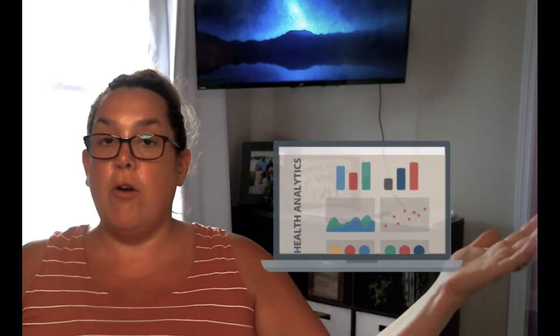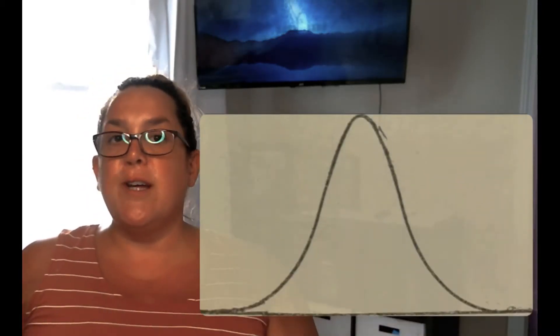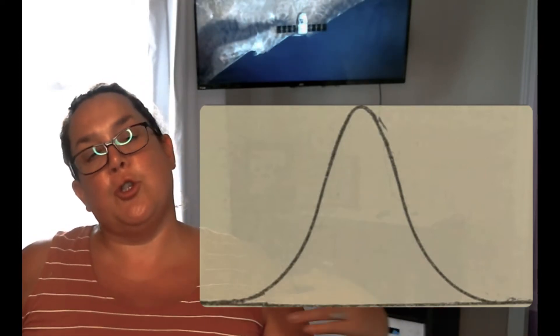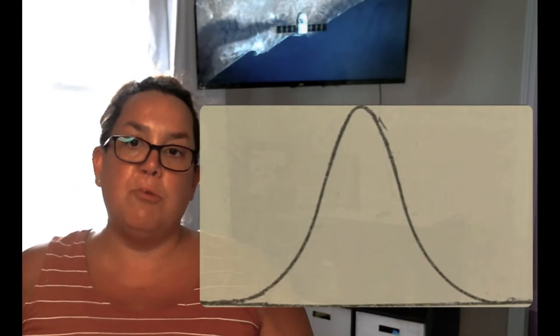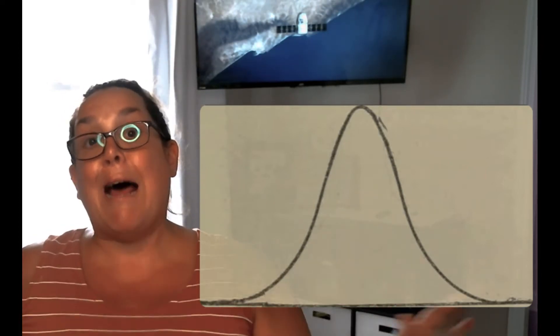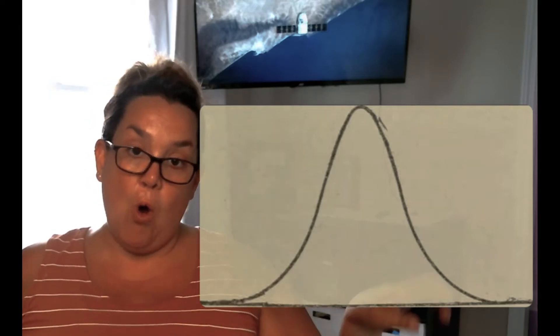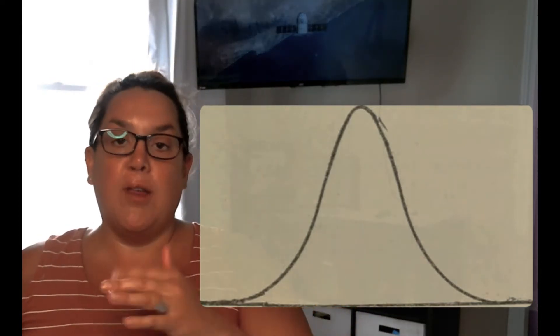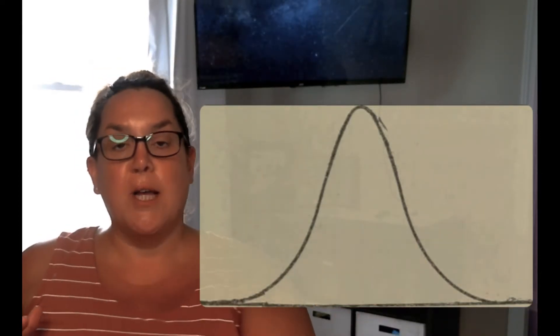I have a separate video talking about the definition of categorical and quantitative, but essentially all variables have a distribution. One that happens most frequently is something called the bell-shaped distribution, or we refer to it as the normal distribution. Lots of things follow the normal distribution, or they look like that when they're graphed.